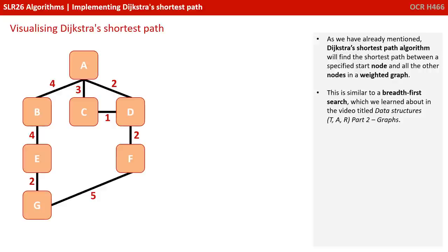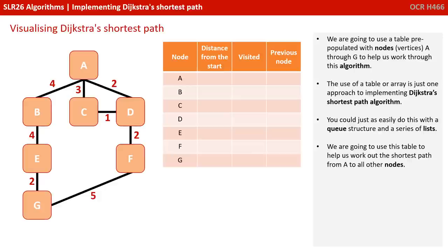Dijkstra's shortest path algorithm will find the shortest path between a specified start node and all the other nodes in a weighted graph. This is similar to a breadth-first search. We're going to use a table pre-populated with nodes or vertices to help us work through this algorithm. The use of a table or array is just one approach — you could also use a queue structure and a series of lists.